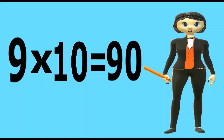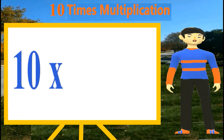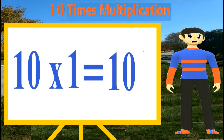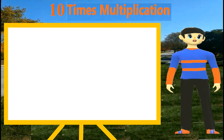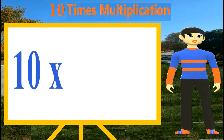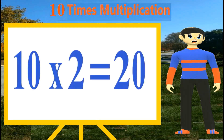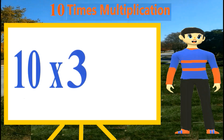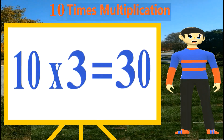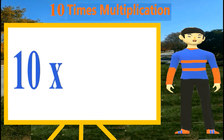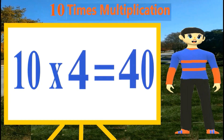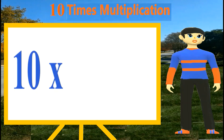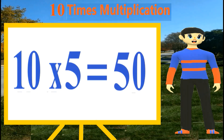Ten ones are ten. Ten twos are twenty. Ten threes are thirty. Ten fours are forty. Ten fives are fifty.